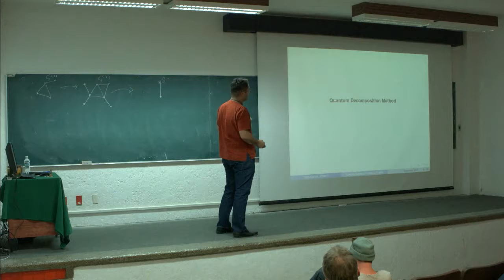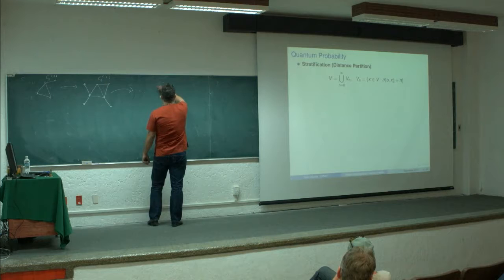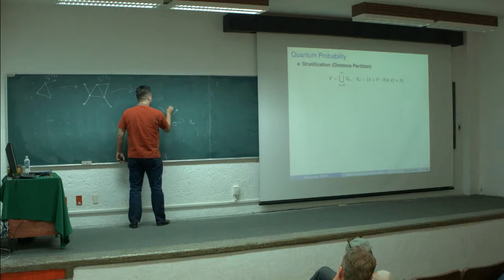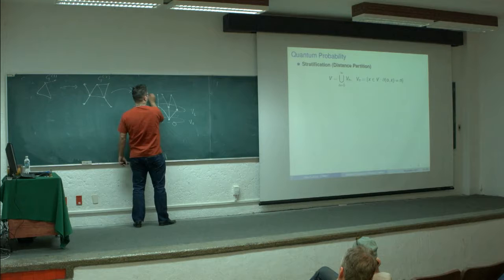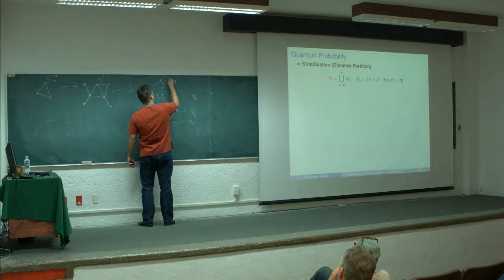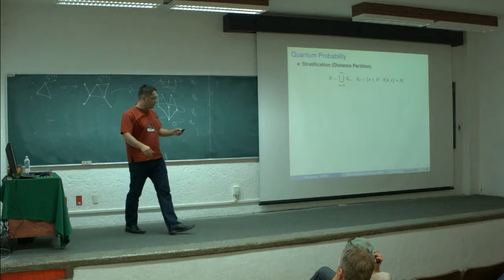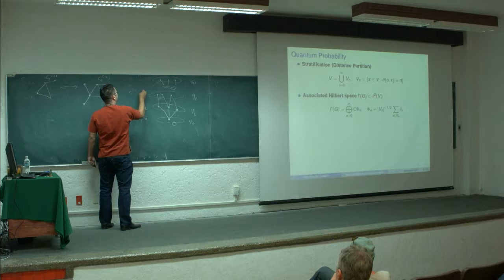I want to talk today about the quantum decomposition method. If we have a stratification of the graph, for example, this is the root and the set containing only the root is V0. We have the neighbors of the root in the next level V1, then V2, and so on up to Vn. We call this the stratification of the graph. We associate a Hilbert space to this stratification, with basis vectors phi_0, phi_1, up to phi_n.